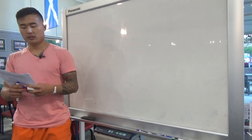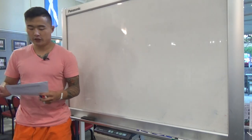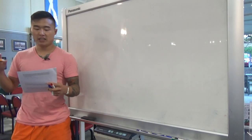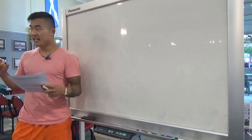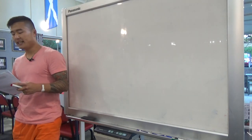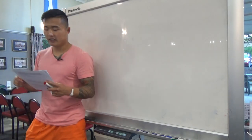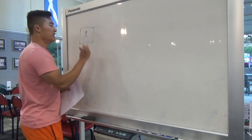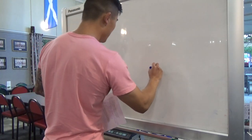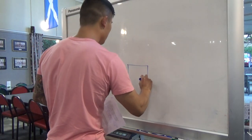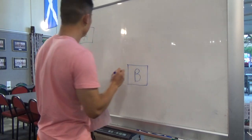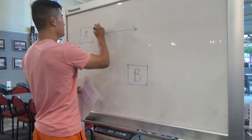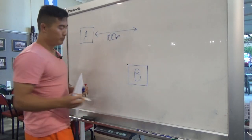Number one, our first question: we have two cars traveling in a straight line in the same direction along a multi-lane highway in adjacent lanes. Car A starts 100 meters behind car B, and both cars are initially traveling with a velocity of 20 meters per second. So we've got car A and car B with a distance of 100 meters between them.